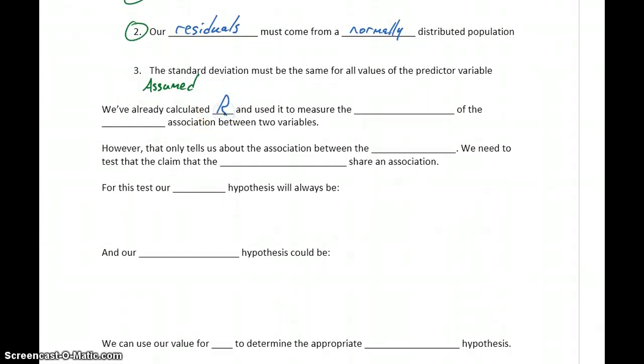We've calculated R and used it to measure the strength of association, specifically the strength of the linear association if one exists. But that value for R is just a sample statistic. Just like the sample mean only tells us about the sample data we're considering, it doesn't tell us about the population.